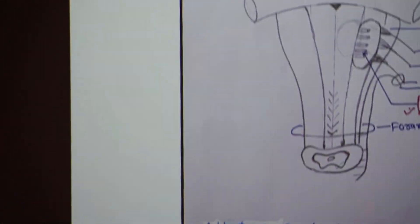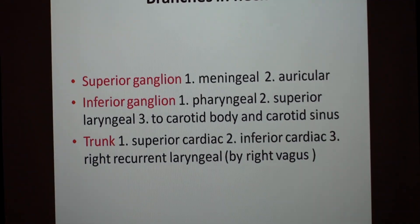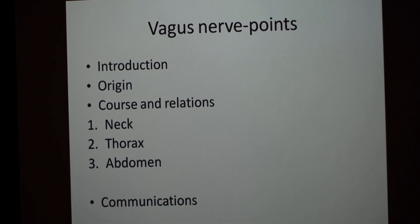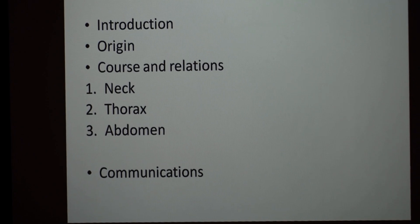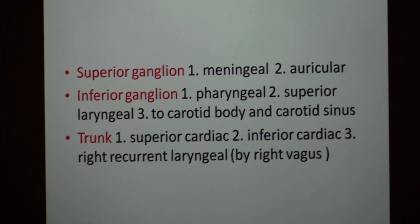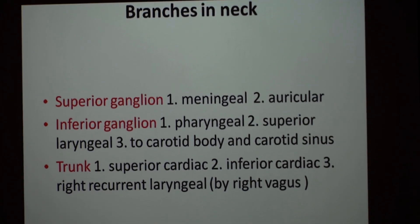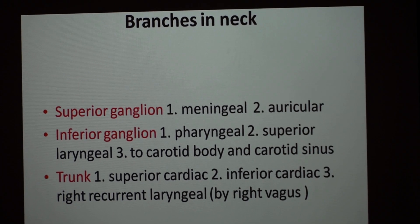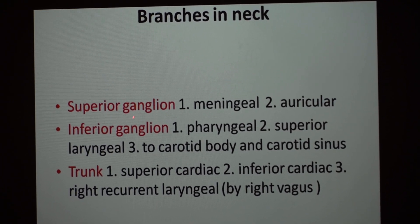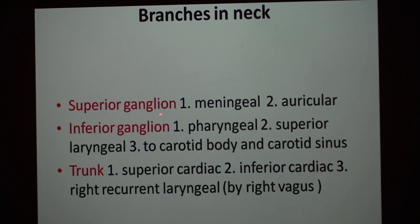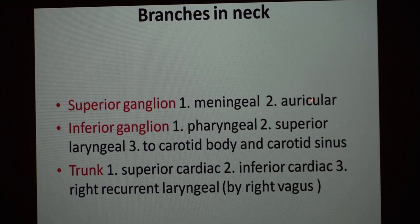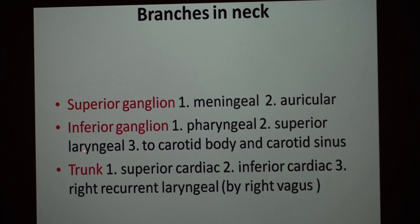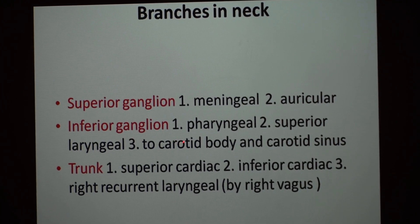Now we will go through the branches. Branches are discussed as: branches in the neck, branches in the thorax, and branches in the abdomen. The vagus nerve has two ganglia — a superior ganglion and an inferior ganglion. From the superior ganglion it gives two branches: the meningeal branch and the auricular branch. From the inferior ganglion it gives mainly three branches.